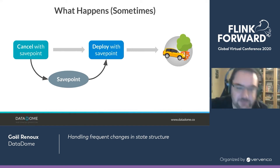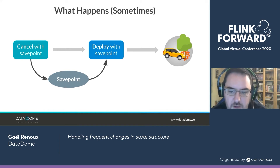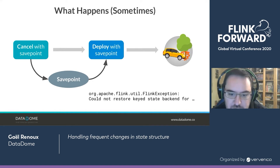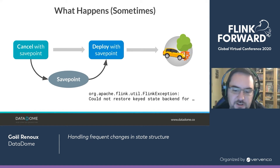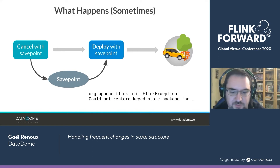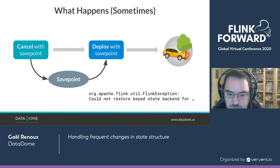Except, obviously, when it's not — we deploy with a savepoint and the job crashes on restart. If you're here, I'm pretty sure it's something that has happened to most of you. It says the Flink exception could not restore keyed state backend for whatever, or could not restore state backend for whatever. Obviously, your state has changed and the new state structure is not compatible with the old state structure.